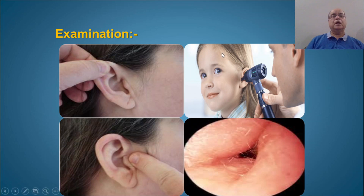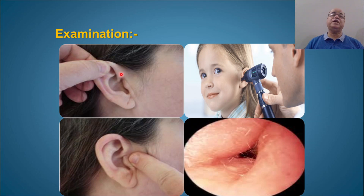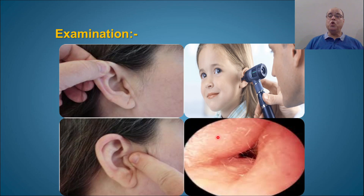On examination, pulling the pinna upwards, backwards, or downwards, or pushing the tragus, will cause pain. All movements of the pinna will be tender because the whole external auditory canal is inflamed. In localized otitis externa, only that direction of pinna movement toward the site of localized infection causes pain. The tragus sign will be positive here. On otoscopic examination, you will see a narrow external auditory canal — the lumen is very narrow. The tympanic membrane is only partially visible in the depth, and all the walls of the external auditory canal are edematous, congested, and some discharge may be present.